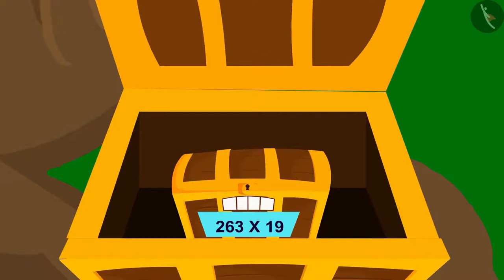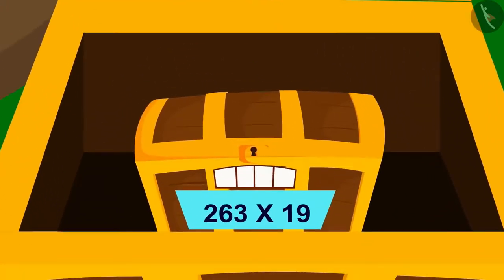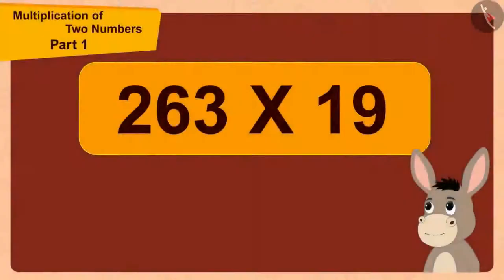And this box too has a four-digit lock just like the first box. This time, this multiplication is written under the lock. Bhola thought,